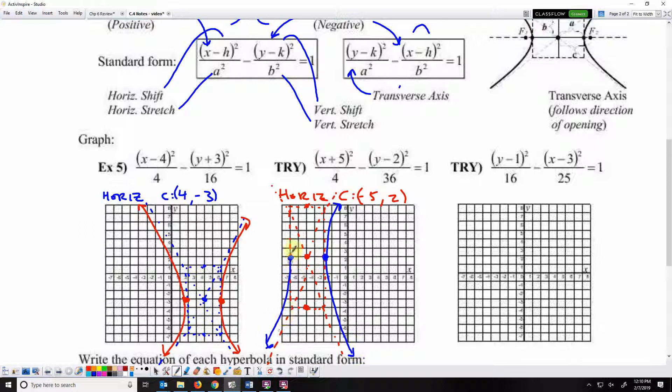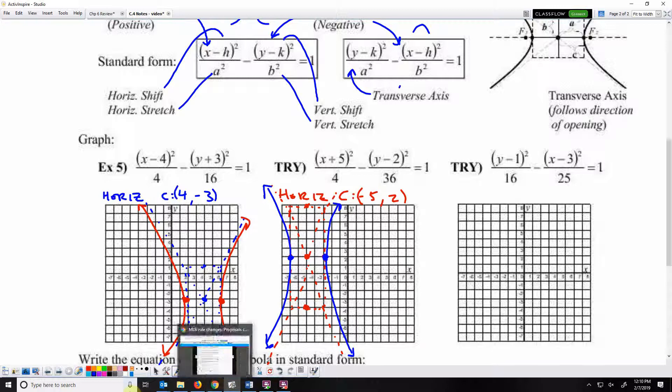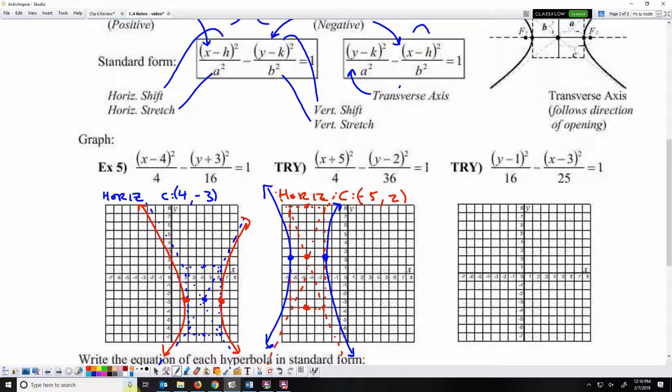This one is vertical because y is first, so my transverse axis this time is the y-axis. It will be vertical. The center—I still have to get the first component from this x. The center is 3, 1. Over 3, up 1. There's my center.